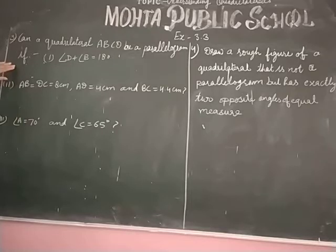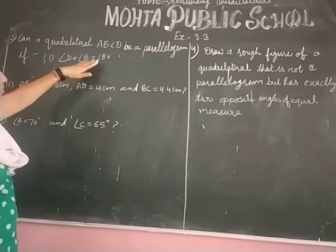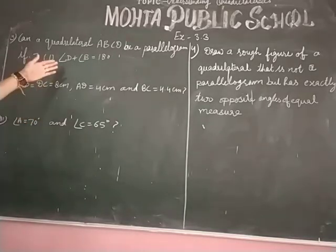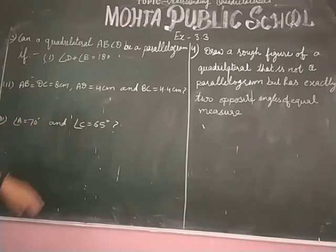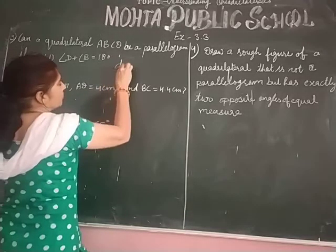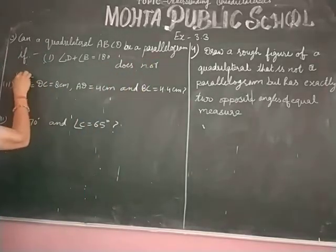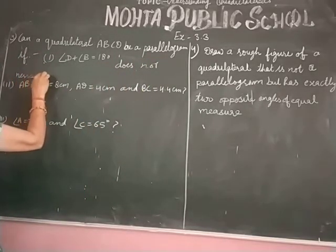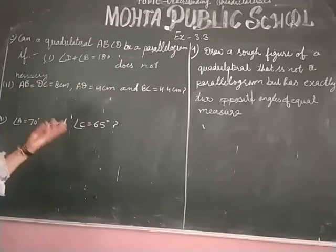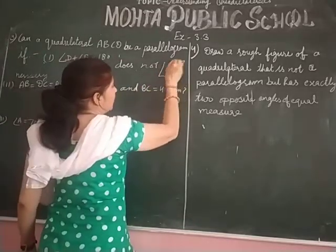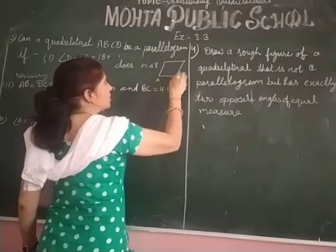The condition given is: if angle D plus angle B is equal to 180 degrees, it does not necessarily make it a parallelogram. Let's draw a quadrilateral ABCD.